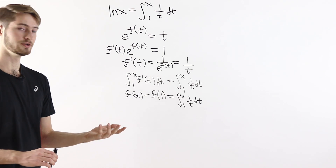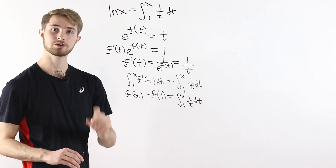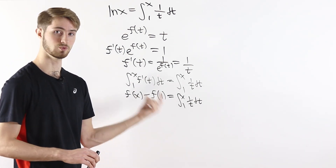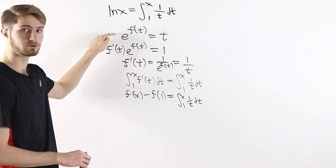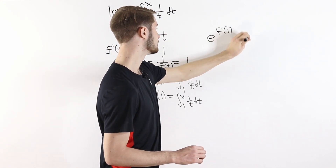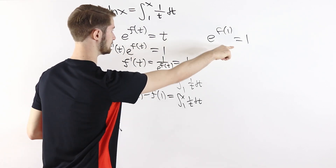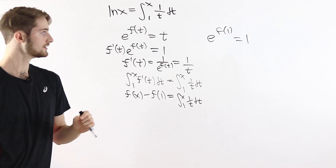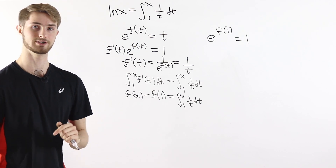Our ultimate goal is to prove that f of x equals this integral, so we're almost there, but we need to figure out what f of 1 is. To figure this out, we can go back to the original equation. We know that e to the f of 1 is equal to 1 — that's just taking the equation and plugging in t equals 1. Let's try not to use natural logs here, since we're trying to prove an equation about the natural log.